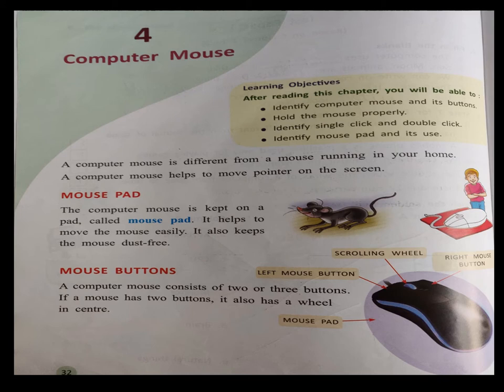A computer mouse consists of two or three buttons. If a mouse has two buttons, it also has a wheel in the center. Looking at this mouse, you have the right mouse button, a scrolling wheel in the center, and the left mouse button. The mouse is kept on a mouse pad.